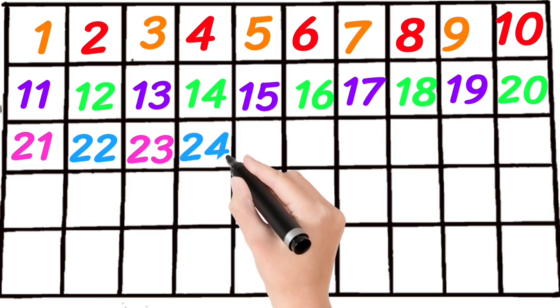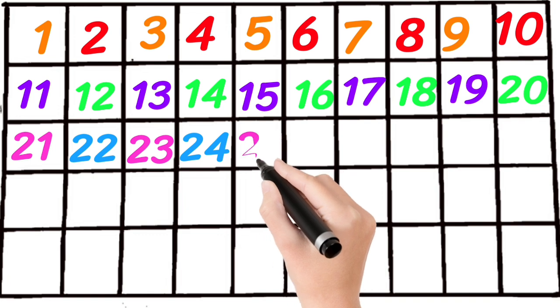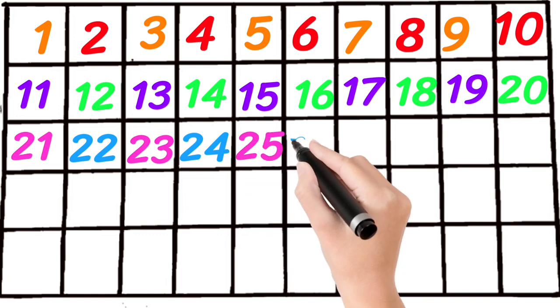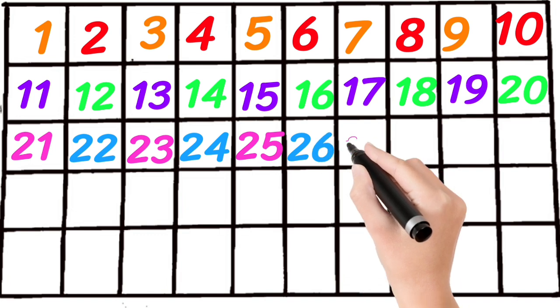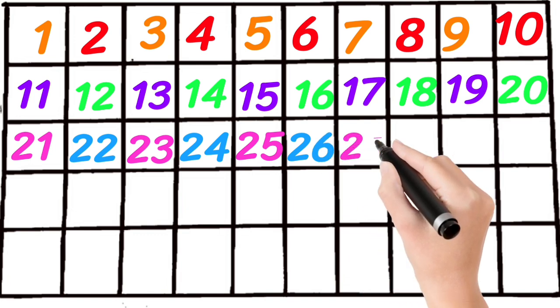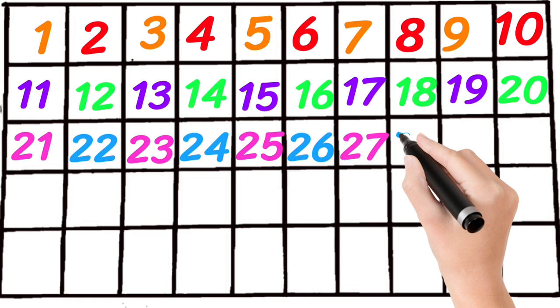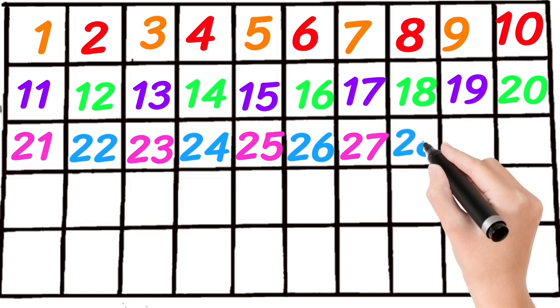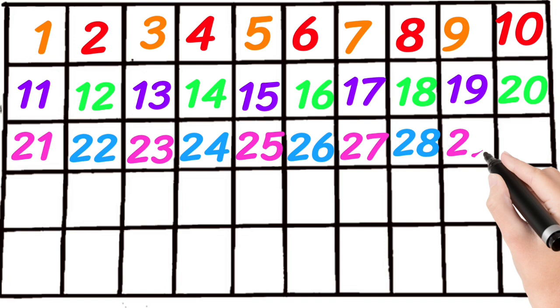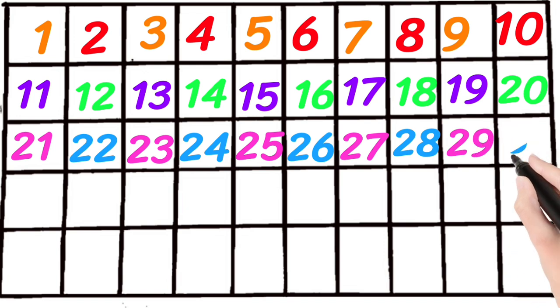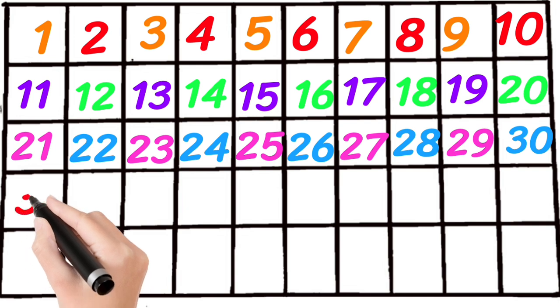Twenty-five, twenty-six, twenty-seven. Two, eight, twenty-eight. Twenty-nine, thirty, thirty-one.